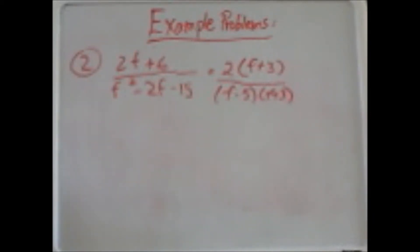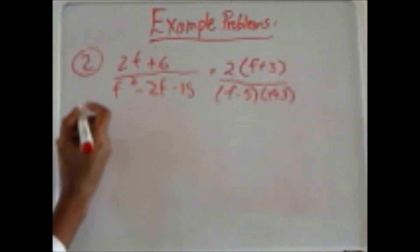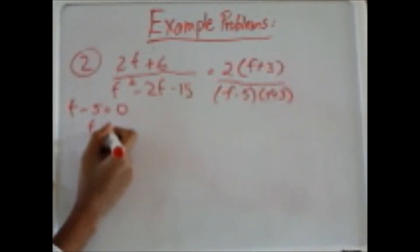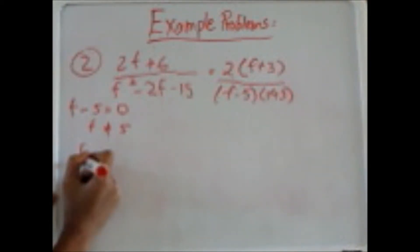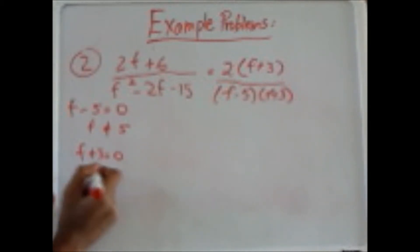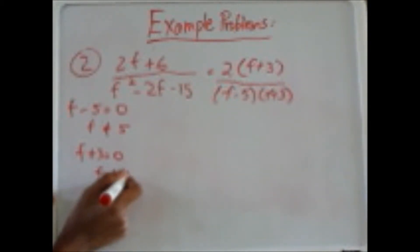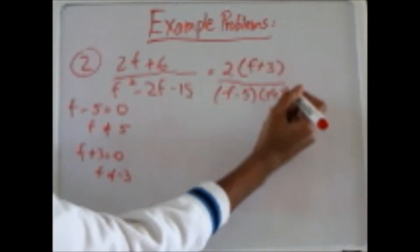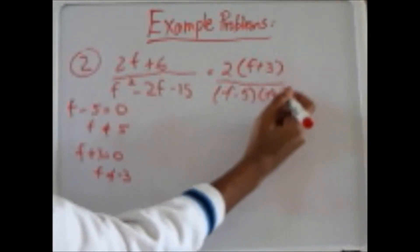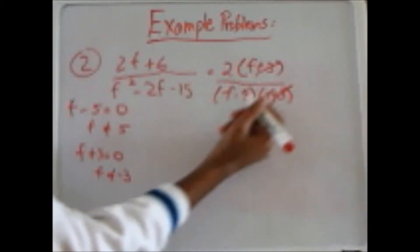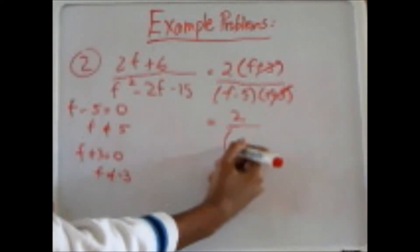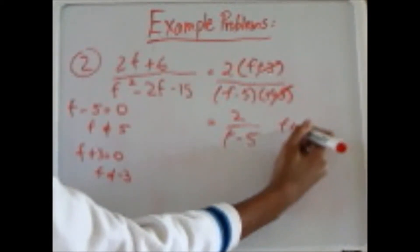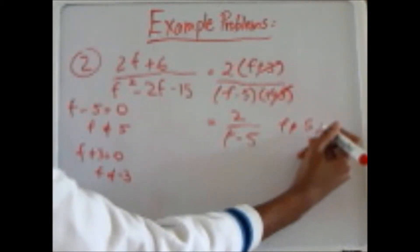Our second step is to state the restrictions. The restrictions are f cannot equal 5 and f cannot equal negative 3. Our third step is to cancel out anything in both the numerator and denominator, which is f plus 3. We are left with 2 over f minus 5, where f cannot equal 5 or negative 3.